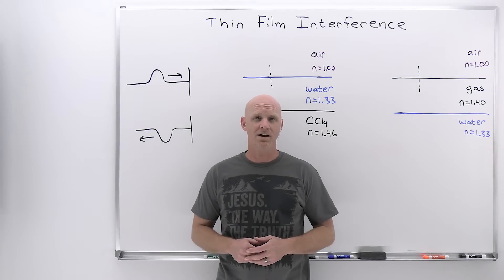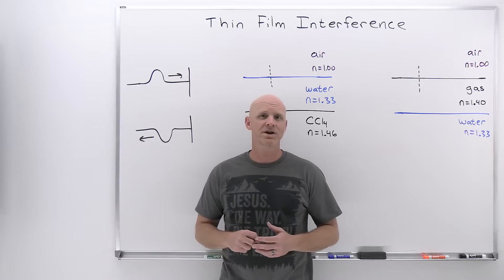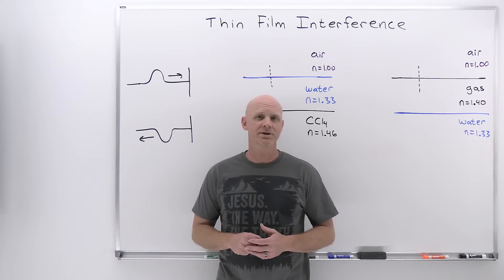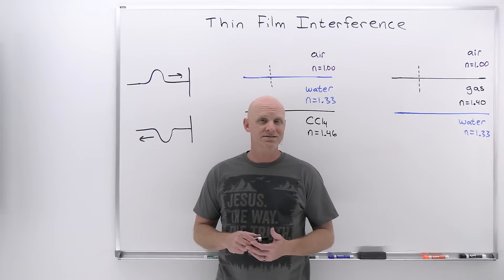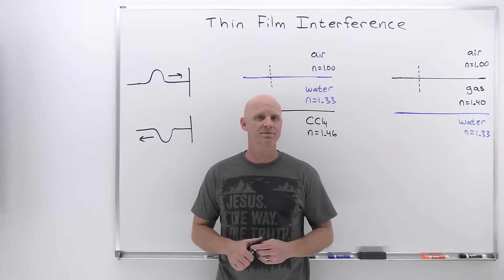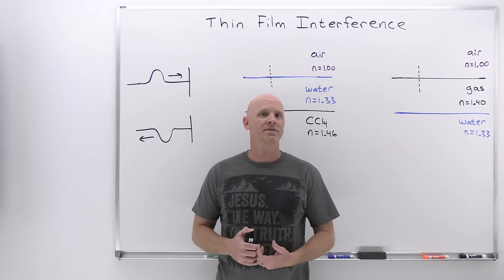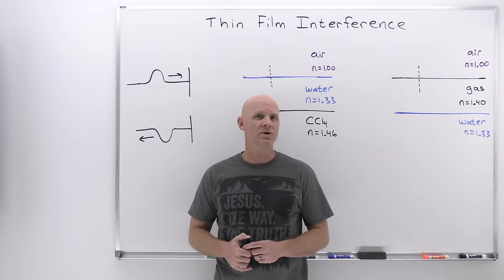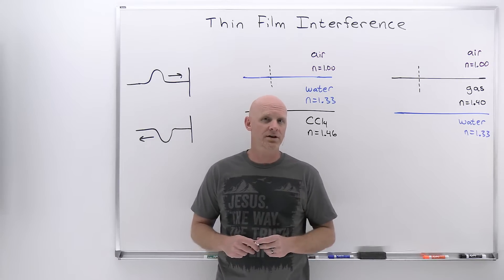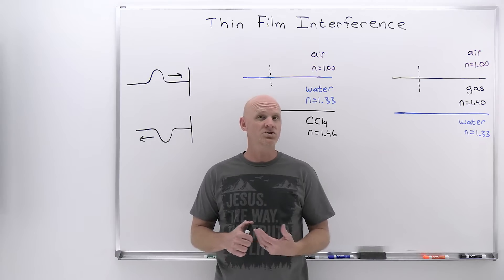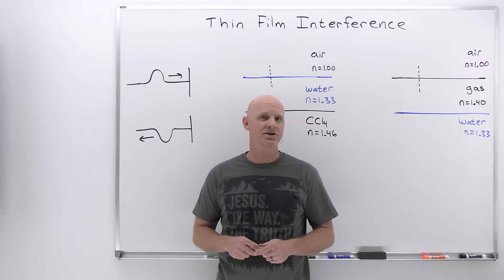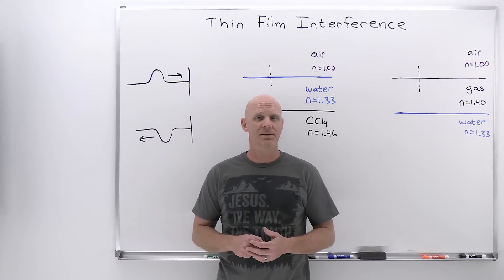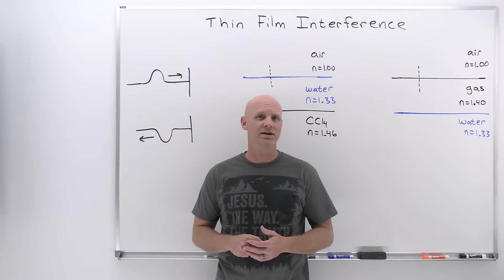Thin-film interference is going to be the topic of this lesson in my new general physics playlist, which when complete will cover a full year of university algebra-based physics. This is the second lesson in a chapter on wave optics. We just covered double-slit interference, and we'll find out that there's some other interference possible when you've got a thin film of a liquid — effectively two reflected rays that have a chance to either constructively or destructively interfere. My name is Chad, and welcome to Chad's Prep.